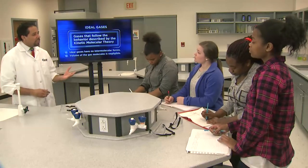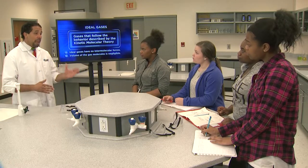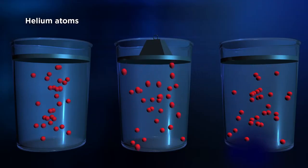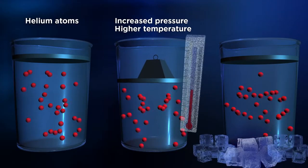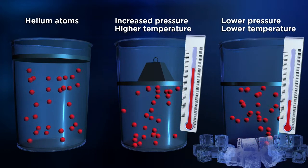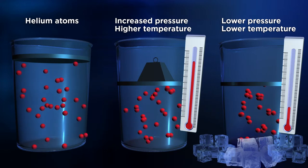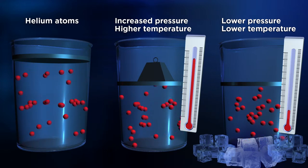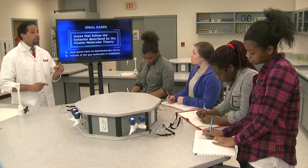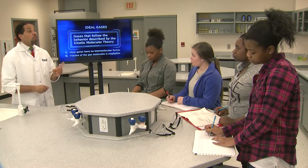Most gases will behave ideally under normal conditions, although under extreme conditions of pressure or temperature, gases begin to deviate from behavior described by the kinetic molecular theory. As pressure increases or temperature decreases, gases tend to condense to liquids and non-ideal behavior begins to dominate. As gas molecules condense, they draw closer together, causing intermolecular forces to increase and the volume between the molecules to decrease, resulting in non-ideal behavior. Gases that do not follow the ideal behavior predicted by the kinetic molecular theory are called real gases.